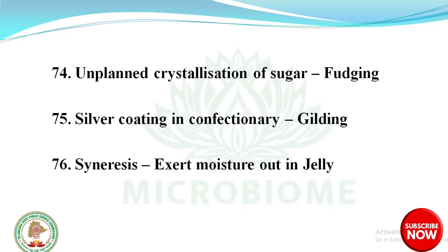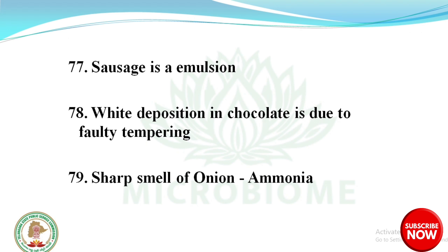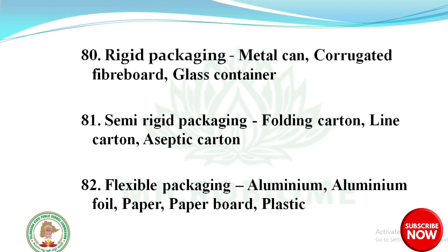Sausage is an emulsion. White deposition in chocolate is due to faulty tempering. Short smell of onion is due to ammonia. Rigid packaging examples: metal can, corrugated fiber board, and glass container.